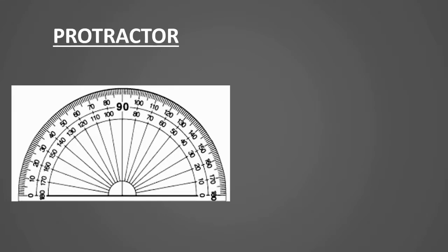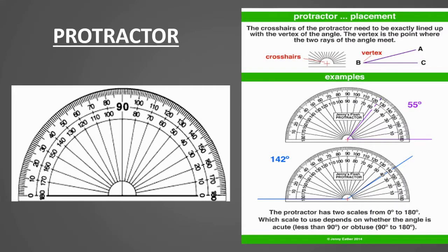Now we will see what is a protractor. A protractor is a measuring instrument, typically made of transparent plastic or metal, for measuring angles. The protractor has two scales, from 0 to 180 degrees. Which scale to use depends on whether the angle is acute (less than 90°) or obtuse (90° to 180°).